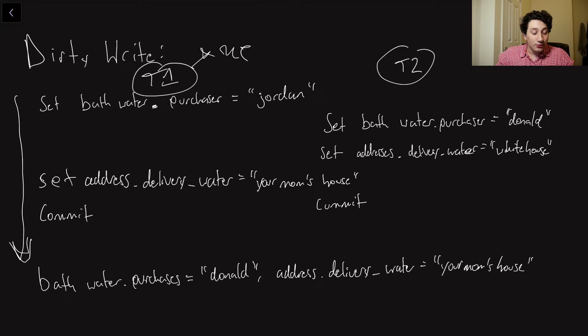Similarly, though, his write is reaching the database faster than mine. So now he has address.delivery_water is the White House because that's where he wants it sent to. And I, of course, want it sent to your mom's house at T4. So basically, our writes go ahead and get interleaved.